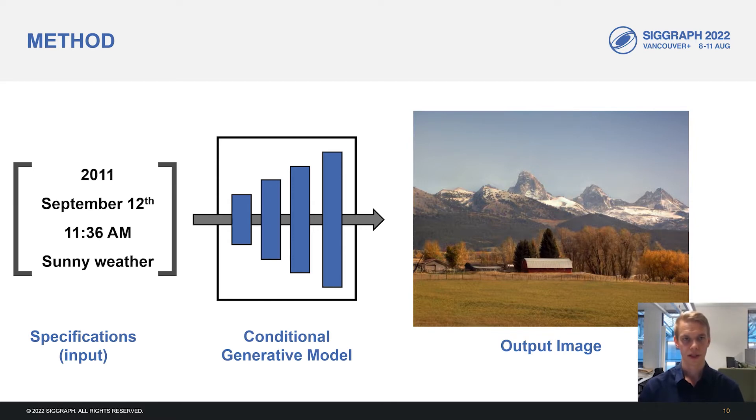Instead, our chosen method looks like the following. As our specification, we take a decomposed time. This means specifying the year, which controls trends like the growth of trees and the existence of buildings. We also specify the date to control seasonal appearance, as well as the time of day for overall lighting conditions. Finally, we want to be able to specify the random conditions of the image, like the current weather. We use a conditional generative model as our function f, since they are suitable for modeling the distributions of outputs that we're interested in producing. And we believe we're the first to study this problem in this specific setting.